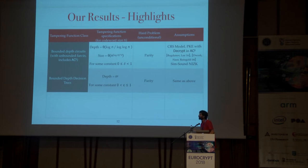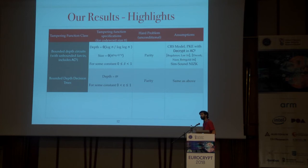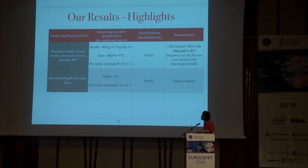Similarly, we also get tamper resilience against tampering functions modeled as bounded depth decision trees of depth up to n to the epsilon, where n is the length of the codeword. The hard problem we need is again parity. One thing to note is that this hard problem is information-theoretic — there are no computational assumptions — and we need the same computational assumptions for the bounded depth decision trees.